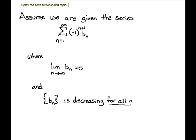Now into the proof. We're going to assume we're given the series, sum from n equals one to infinity of negative one to the n plus one times b sub n. When I stated the theorem that was negative one to the n plus k — it doesn't really matter if it's n plus one, n plus k, or n; it's an alternating series. But for ease of the proof I'll use n plus one starting at n equals one. We also assume that the limit as n goes to infinity of b sub n equals zero, and that the b sub n's are decreasing for all n.